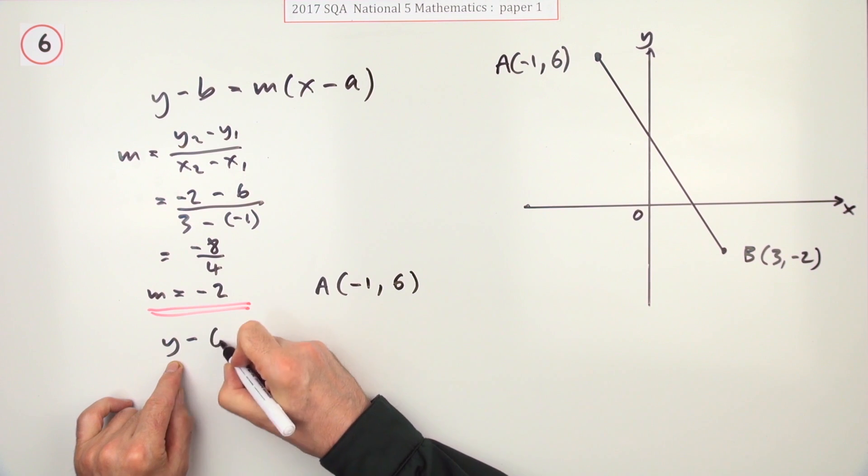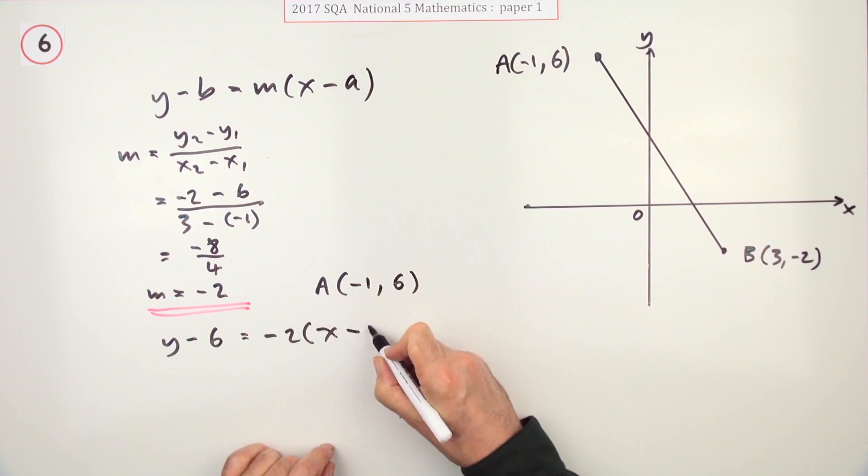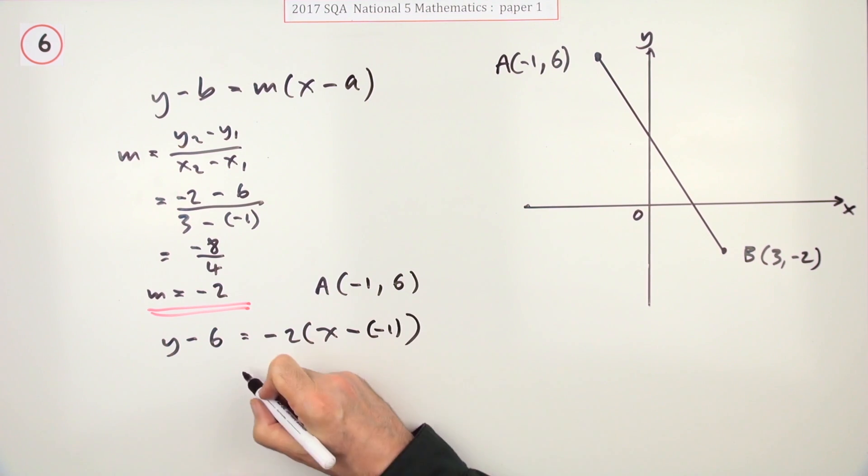Now just put it in, pick a point. We use the point A, negative 1, 6. Then it'll be y minus the y coordinate is m, which is negative 2, times x minus the x coordinate. Now just tidy that up so you've got negative 2x.